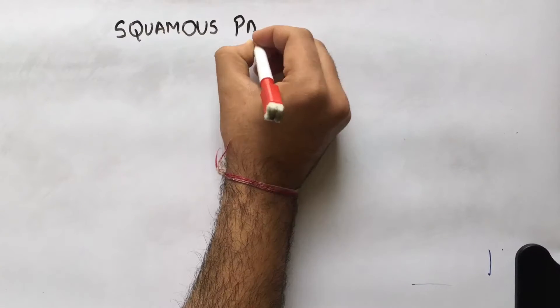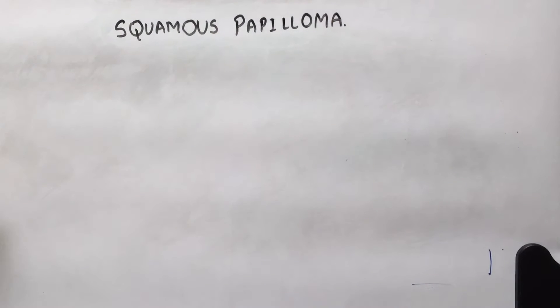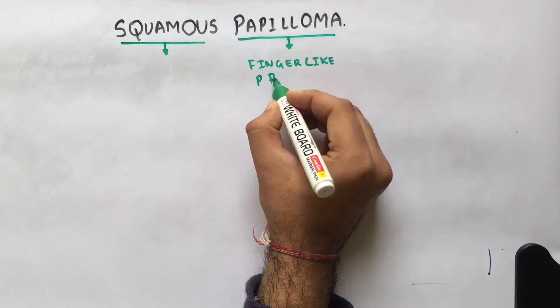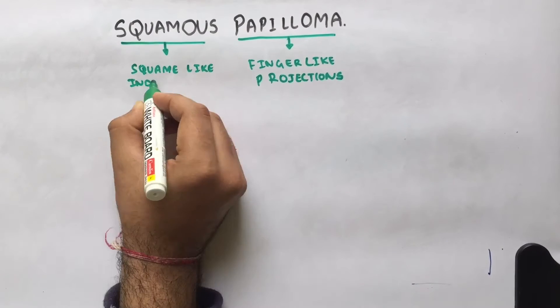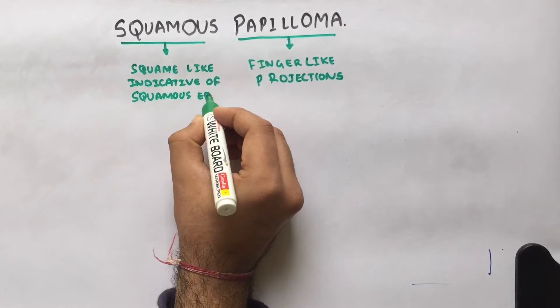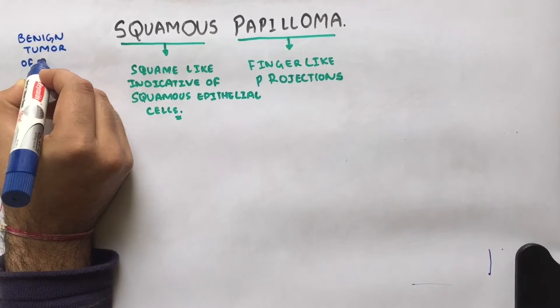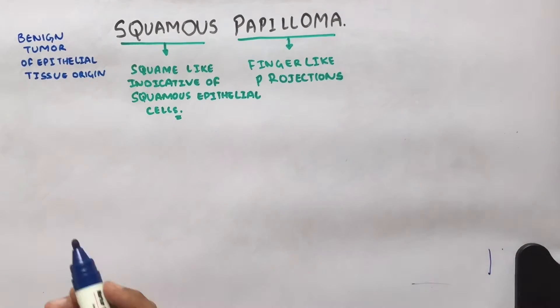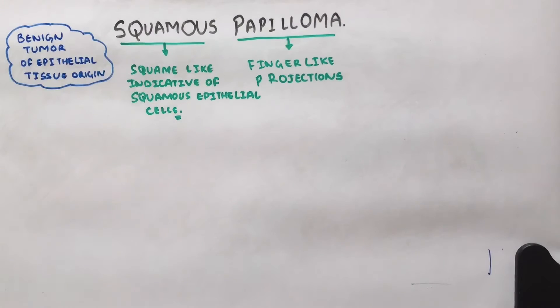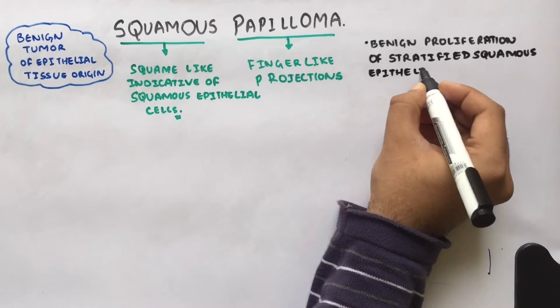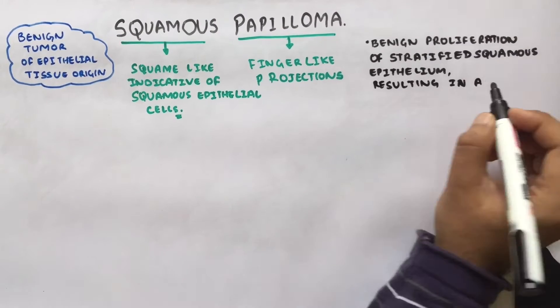Today we are going to discuss squamous papilloma. As the words suggest, squamous and papilloma - papilloma means finger-like projections and squamous is indicative of squamous-like cells. It is a benign tumor of epithelial tissue origin. Going with the definition, we can say that it is benign proliferation of stratified squamous epithelium resulting in a papillary or verruciform mass.